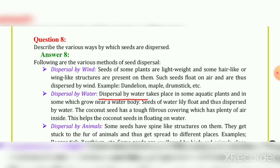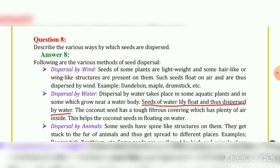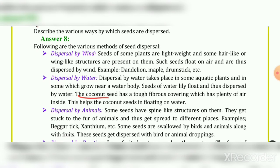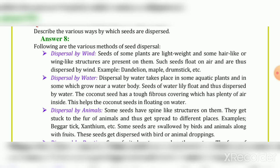Next, dispersal by water: this takes place in some aquatic plants and in plants which grow near a water body. Seeds of water lily float and are thus dispersed by water. The coconut seed has a thick fibrous covering with trapped air inside - this helps coconut seeds float on water.